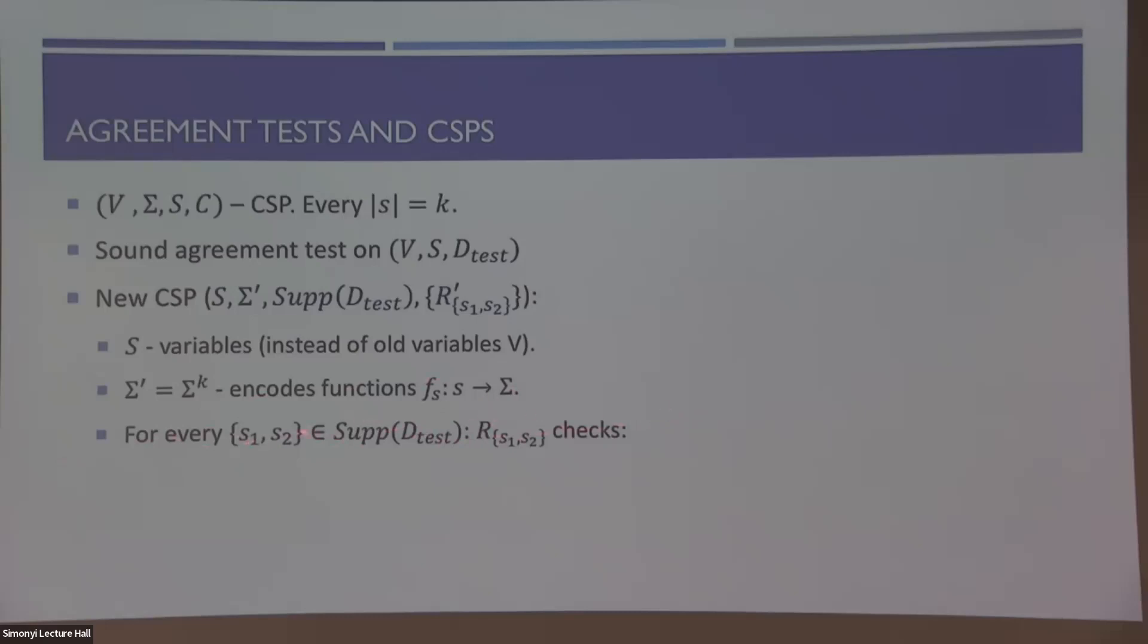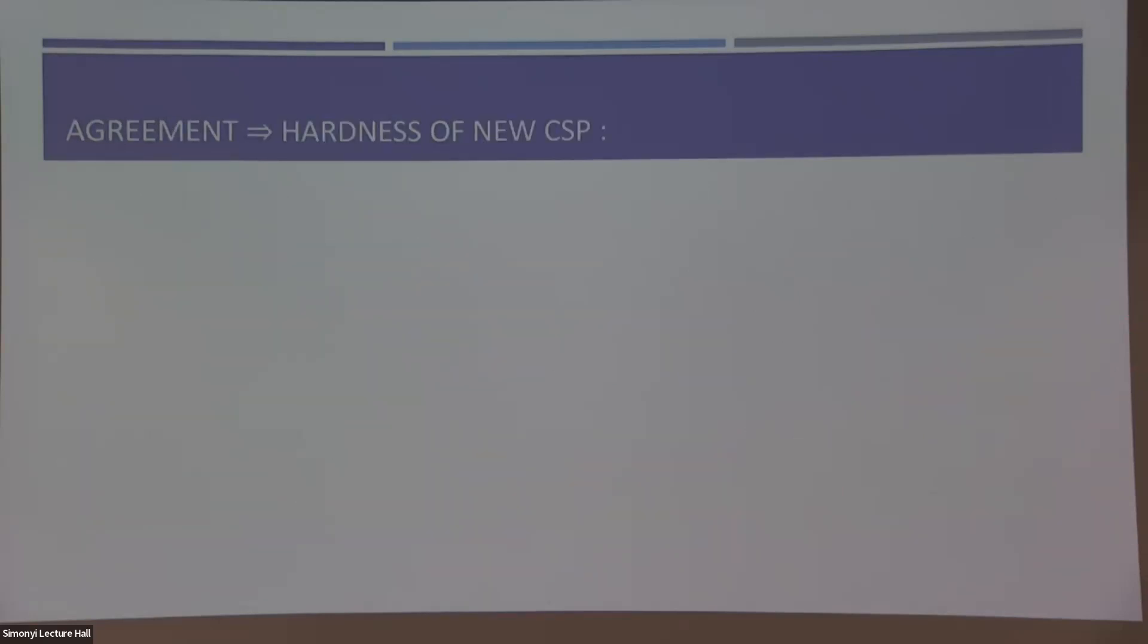And now for every pair in the support of our test, we will create a constraint. This constraint looks at only these two variables. And it will first check that the local functions indeed satisfy our old constraints. But second, it will also check consistency, check that these local functions actually agree with each other on their intersection. So pictorially, we start with a CSP that looks like this, a lot of variables in every set. And we end up with a CSP that looks like this.